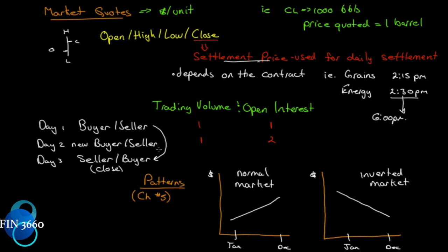On day three, the original buyer and seller from day one reverse their positions and close out — trading volume is one, but open interest drops from two down to one because only one contract remains open. Open interest is the sum of all contracts still open at end of day; trading volume is the volume of trades during the day. You could have a buyer and seller trade and close a contract 10 times — volume would be 10, but if they completely nullify each other, open interest increments by zero.